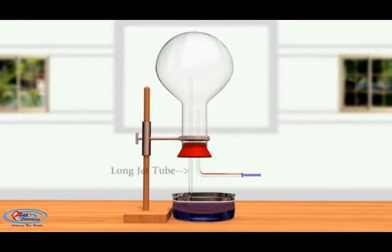Through one hole, insert a long jet tube, and another hole has a dropper with few drops of water. See, the jet tube is in the beaker. Beaker containing blue litmus solution.